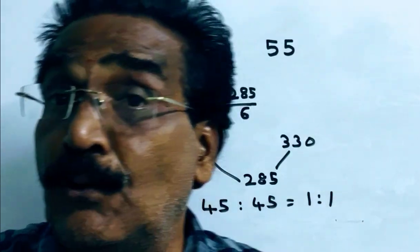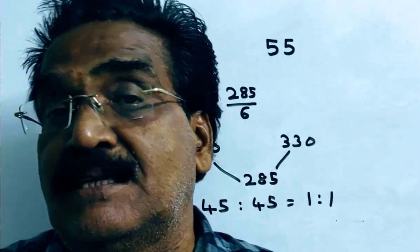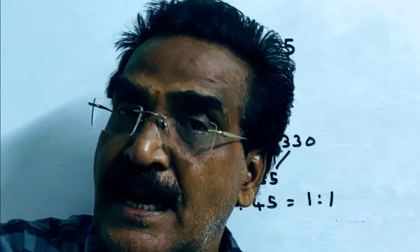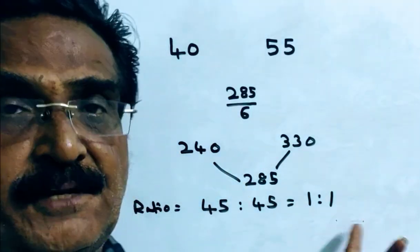That means total time taken is 6 hours. That means he travelled 3 hours by bus and 3 hours by train. 1 is to 1 ratio.